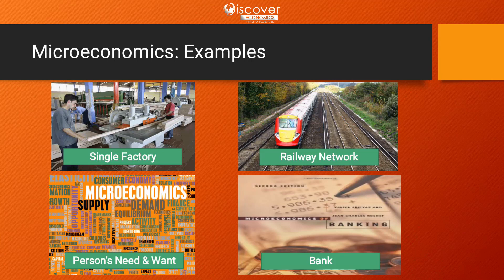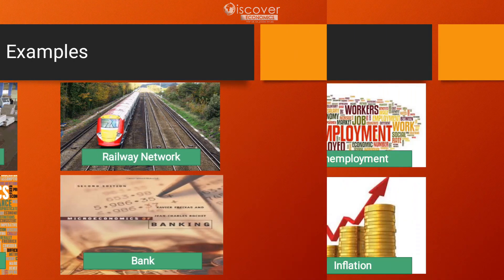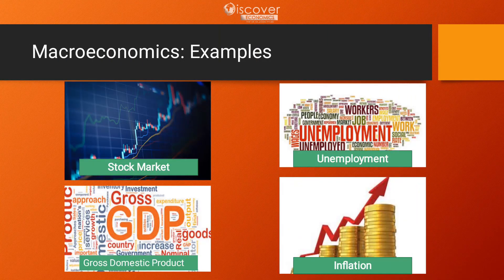Examples of microeconomics include a single factory working in a country, a single train network out of many transport means, the demand and supply of a single individual, and a single bank's performance. All these are types of microeconomics.